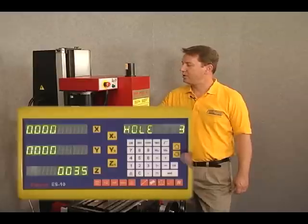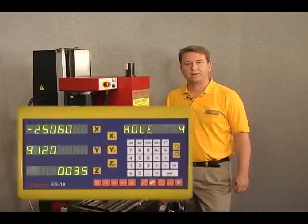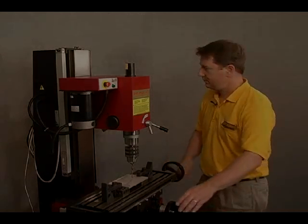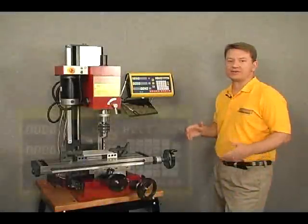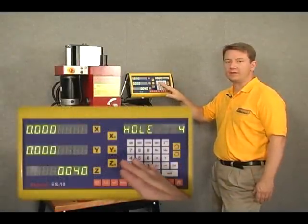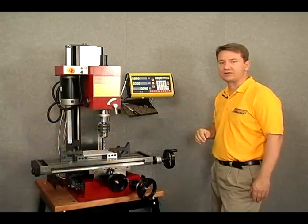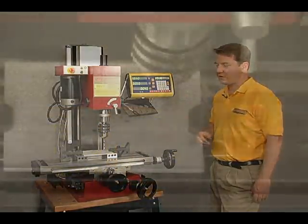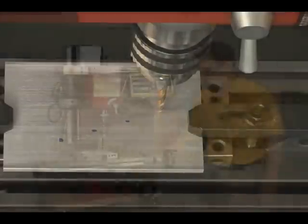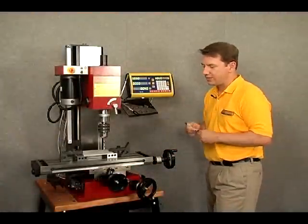Now for our final hole, hole number four. Again, we arrow down and let's zero out the coordinates. So now we're at our final coordinate which is hole number four. We've moved the mill table so that the coordinates are zeroed out and if we look over at the workpiece then we can see that we are indeed at the fourth hole. Let's go ahead and mark that.